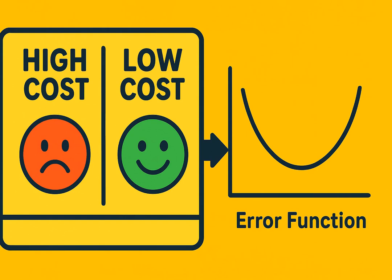The cost function is like a scoreboard. It tells us how bad our model's predictions are. A higher cost means poor predictions, while a lower cost means better predictions. Gradient descent is the method we use to lower this score.